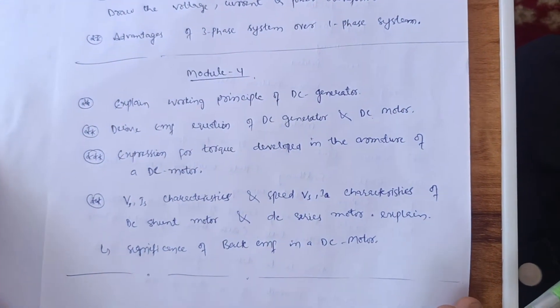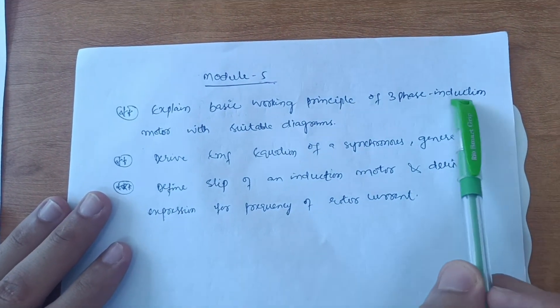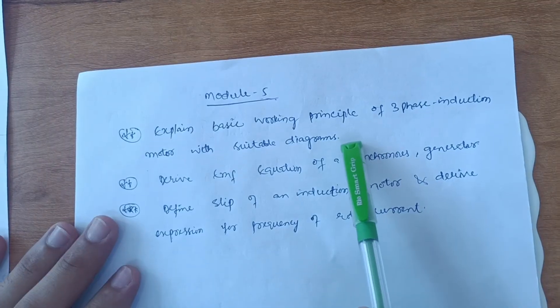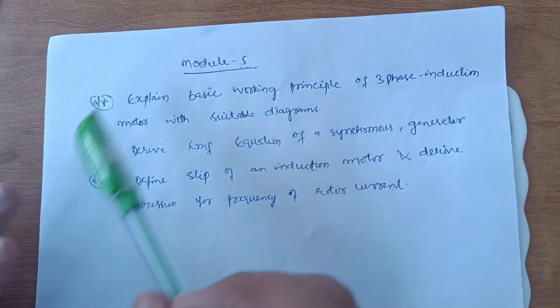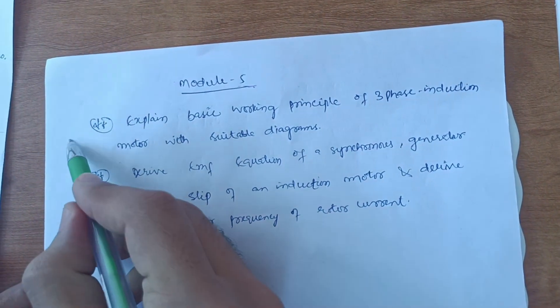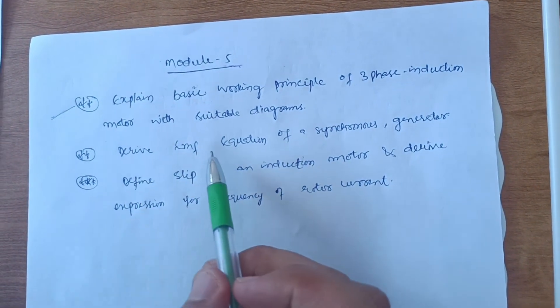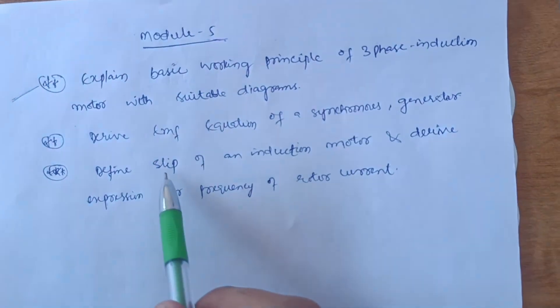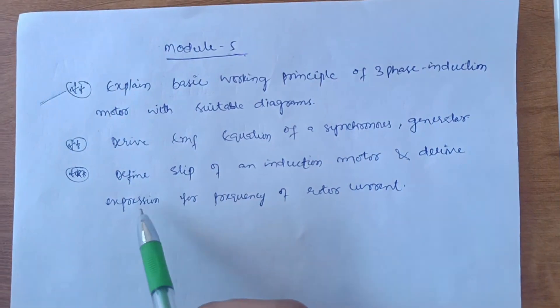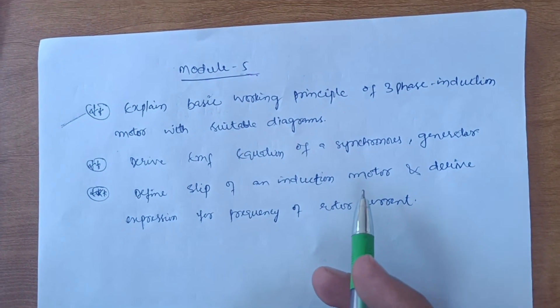For Module 5, focus on: explain the basic working principle of a three-phase induction motor with suitable diagrams — this is the most important question. Also cover: derive the EMF equation of a synchronous generator; define the slip of an induction motor; and derive the expression for frequency of rotor current.